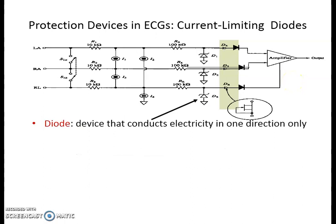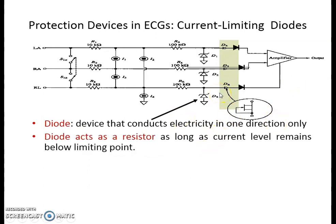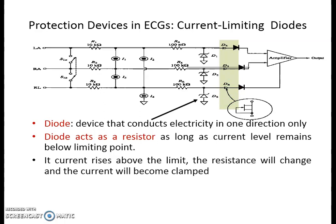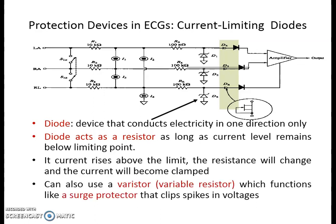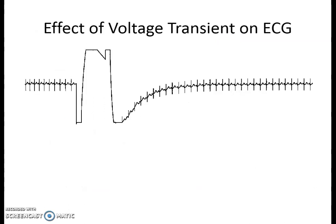The third mechanism is the diode, which conducts electricity in one direction. The diode acts as a resistor as long as the current level remains below a predefined limit. If the current rises above the limit, the resistance changes and the current becomes clamped. It can also be used as a varistor — a variable resistor which functions like a surge protector that clips the spikes in voltages.